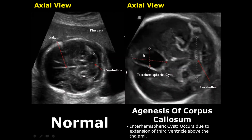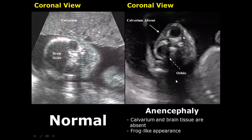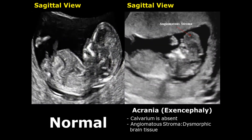An interhemispheric cyst is present between the cerebral hemispheres in the midline, occurring due to extension of the third ventricle above the level of the thalami. Anencephaly is a condition in which both the calvarium and brain tissue are absent — the calvarium is the part of the skull surrounding the brain. Exencephaly, or acrania, is a condition in which the calvarium is absent but abnormal brain tissue — called angiomatous stroma — is present.